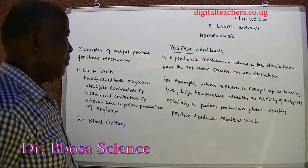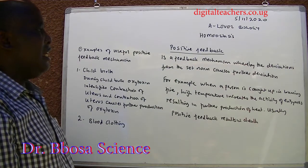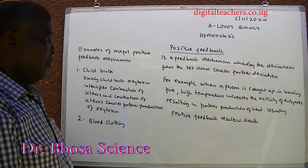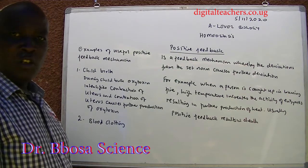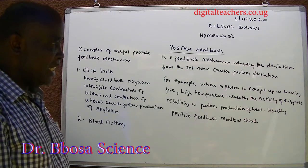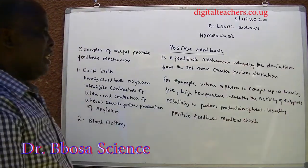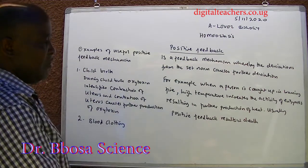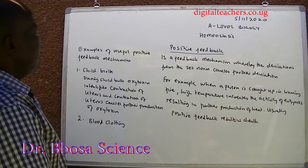Positive feedback is a feedback mechanism whereby the deviation from a set norm causes further deviation. For example, when a person is caught up in a burning fire, high temperature increases the activity of enzymes, resulting in further production of heat. Usually, positive feedback results in death.